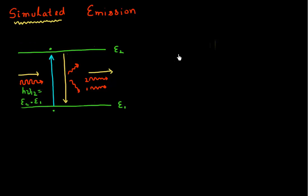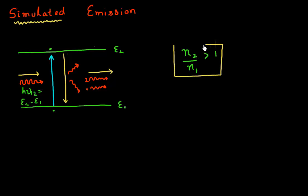We derived the condition for stimulated emission to flourish, or for it to dominate over absorption and spontaneous emission. The condition we derived was that the number of electrons in the higher energy state E2 must be greater than the number of electrons in the lower energy state N1. So N2/N1 should be greater than 1. This is an important condition, sometimes called population inversion, because usually you have more electrons in your lower energy state and fewer electrons in your higher energy state.